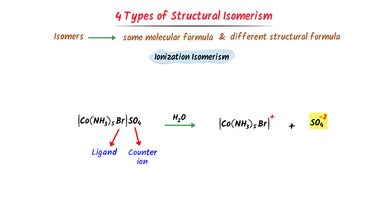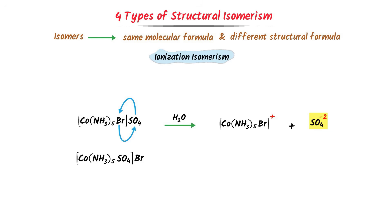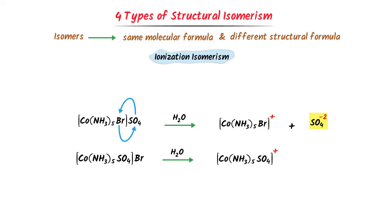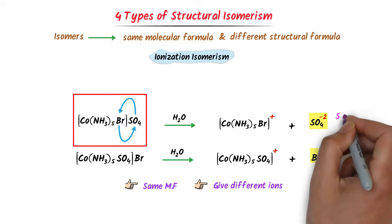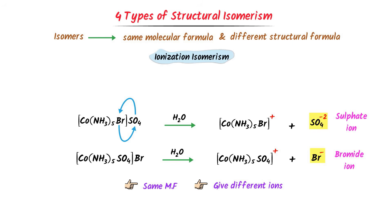Sulfate is a counter ion and bromine is a ligand. If we interchange the ligand and counter ion, we get a second coordination compound where bromine acts as the counter ion and sulfate acts as a ligand. Dissolving this second compound in water gives a positive ion plus bromide ion. Both compounds have the same molecular formula but give different ions in solution.